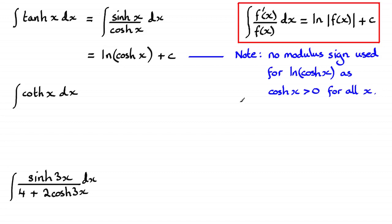So we've got this integral here, coth x, with respect to x. How would we do this one? Well, coth x can be broken down as cosh x divided by sinh x. So we've got this integral here.